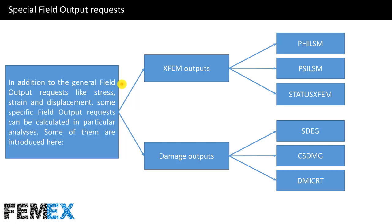Now I want to talk about special field output requests. In addition to general field output requests like stress, strain, and displacement, some specific field output requests can be calculated in particular analyses. Some of them include XFEM outputs such as PHILSM, PSILSM, and STATUS XFEM, and damage outputs like SDEG, CSDMG, and DMICRT.